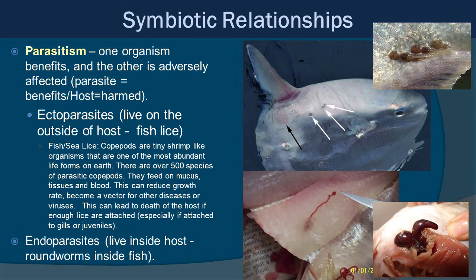Parasitism is where one organism benefits and the other is adversely affected — the parasite benefits while the host is harmed. Ectoparasites live on the outside of the host. An example is fish lice, which are a type of copepod — a tiny shrimp-like organism. There are over 500 species of parasitic copepods; they feed on the mucus, tissues, and even the blood of fish, reducing growth rate, acting as a vector for disease, and potentially leading to the death of the host. Endoparasites live inside the host, like roundworms — you can see fish tissue cut open with a worm inside.